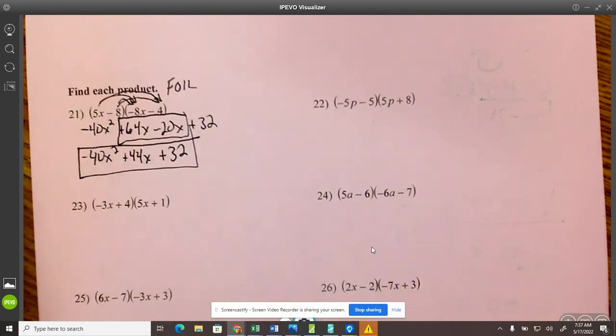Negative 40x squared. So this is plus 44x. That's it. That's all.